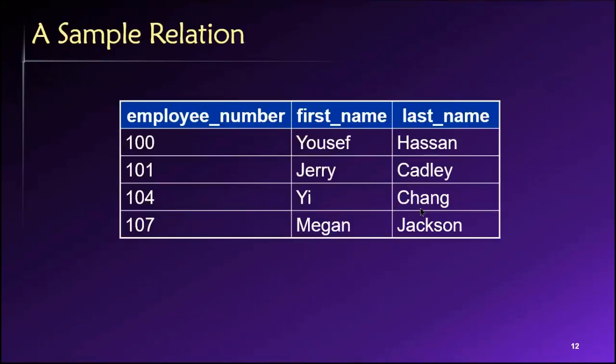Returning to our sample relation from before, we can now look at this and understand that it's very likely that employee number here is serving as a unique key in this relation.